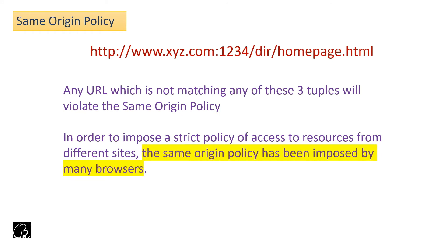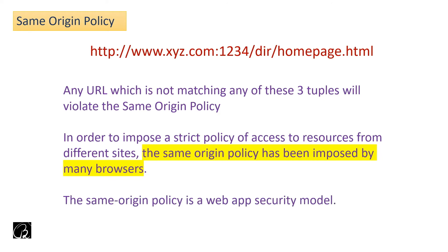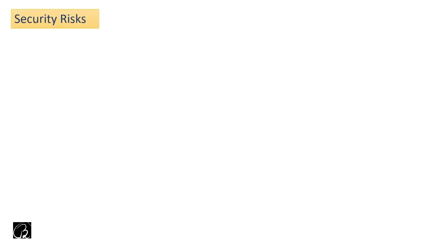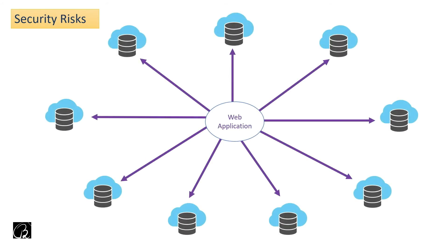In order to impose a strict policy of access to resources from different sites, the Same Origin Policy has been imposed by many browsers. Two key points: first, the Same Origin Policy is imposed by the browser; second, it is a web application security model. But why is it important? Why should we have such a strict policy enforced by the browser? Let's look at the security scenario.